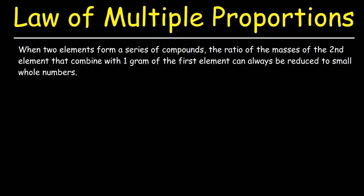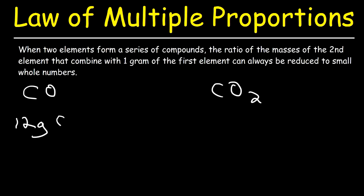So what does that mean? We need to use two elements that combine to form multiple compounds. Let's use carbon monoxide and carbon dioxide. Both of these compounds contain the same two elements — carbon and oxygen — but the way they're combined is different; these are completely different compounds. The atomic mass of carbon is 12 and the atomic mass of oxygen is 16.